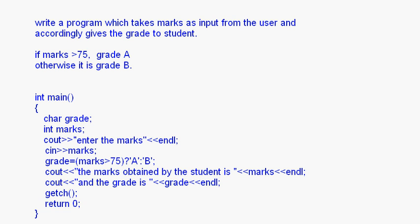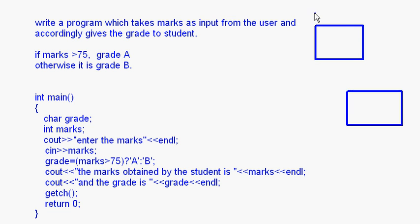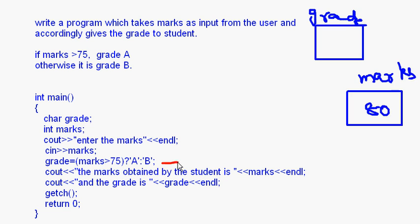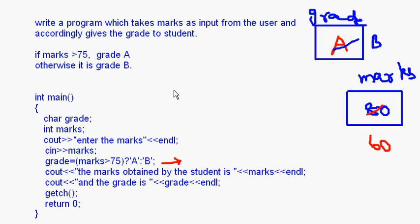Here we have taken a character variable for grade and an integer variable for marks. The user is asked to input the marks. If the user inputs 80, the condition marks > 75 is true, so 'A' goes into grade and is printed. If instead the marks were 60, then the false part executes and grade would be 'B'. This is how conditional operators work — for evaluating small conditions they are very useful.